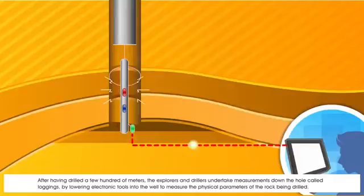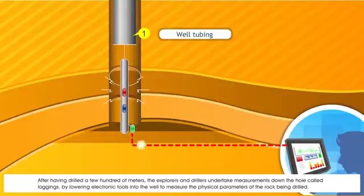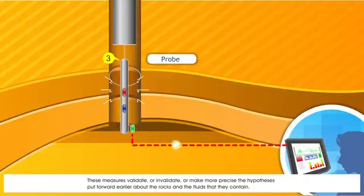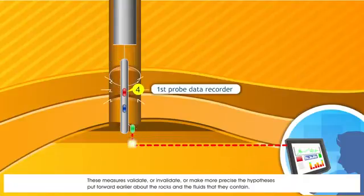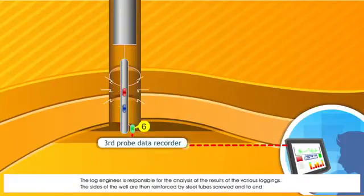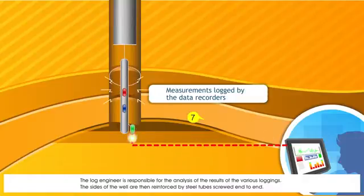After having drilled a few hundred meters, the explorers and drillers undertake measurements called loggings down the hole, by lowering electronic tools into the well to measure the physical parameters of the rock being drilled. These measures validate or invalidate, or make more precise the hypotheses put forward earlier about the rocks and the fluids that they contain. The log engineer is responsible for the analysis of the results of the various loggings.